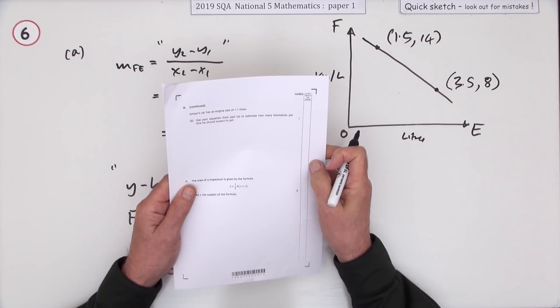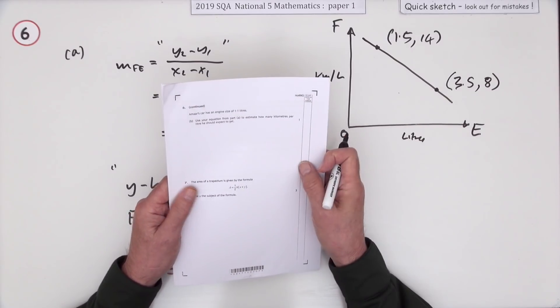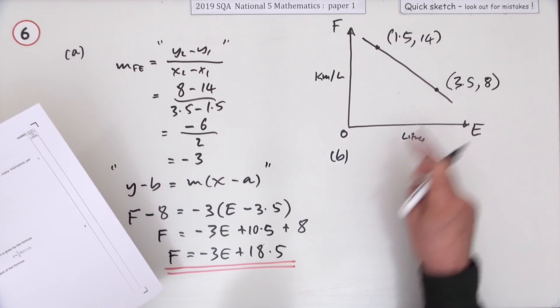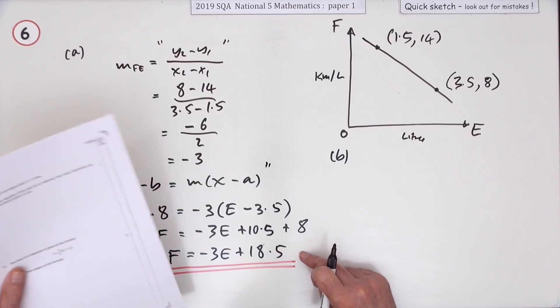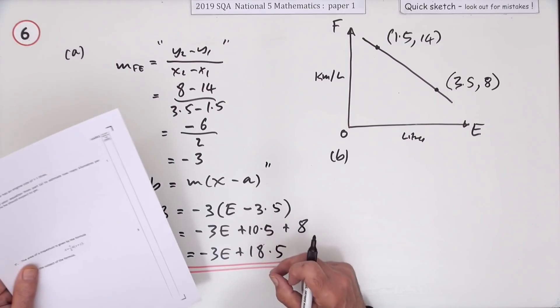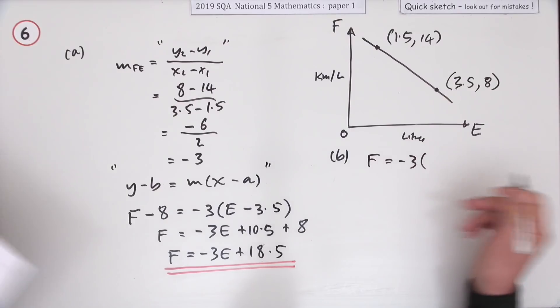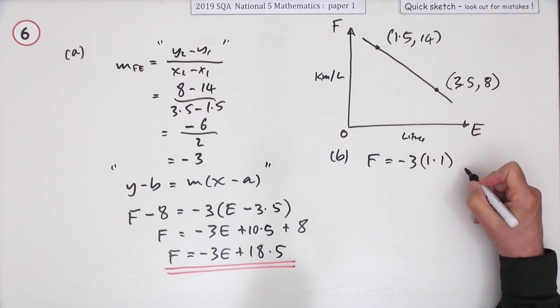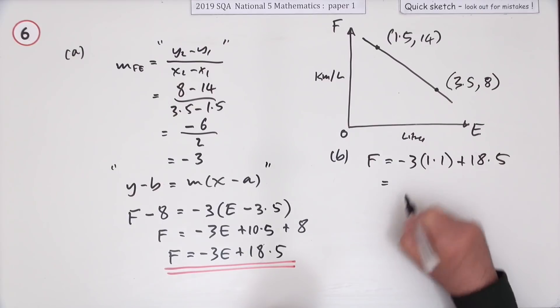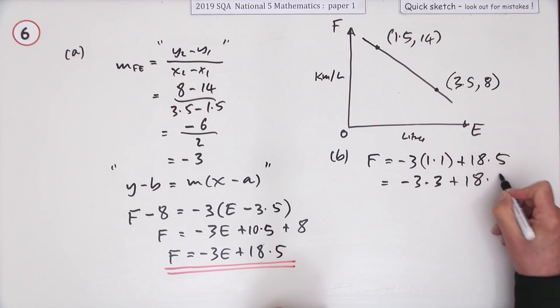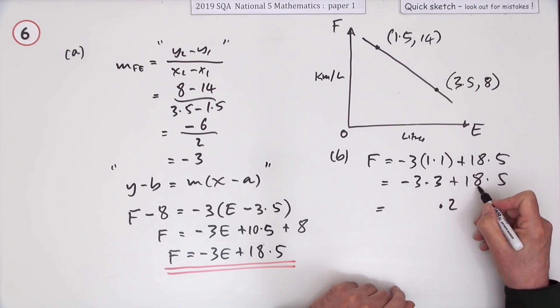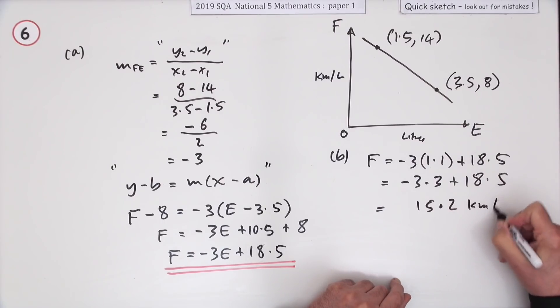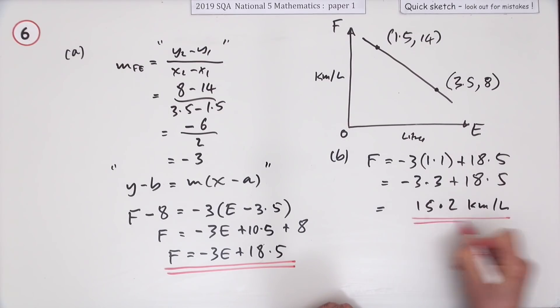Then in part b, just for one mark. Amar's car has an engine size of 1.1. You're not meant to read it off the graph. Use your equation, it says. So whatever you put in, don't try and read the answer from the graph. It has to be consistent with what you've put down here, even if what you've put down is wrong. Use your equation from part a to estimate how many kilometers per liter. In other words, the fuel consumption you should get. So you just pop it into that. f equals negative 3 times, and I've already forgotten, 1.1. The engine size was 1.1. So it'll be that plus 18.5. More decimals to work out. That's negative 3.3 plus 18.5. You can set out one under the other as a wee subtraction, or you can do it in the spot. This has been subtracted. 5 take away the 3 is 2, and 18 take away the 3 is 15. And that should be kilometers per liter.